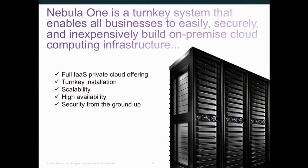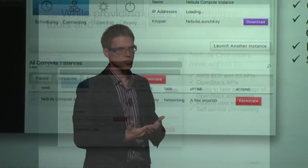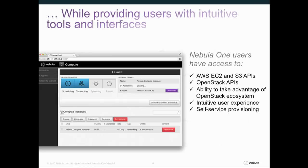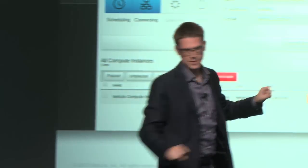So what we've done is we've built a turnkey system that provides full infrastructure services, a turnkey installation, rock solid stability, high availability — everything built from the ground up to provide an intuitive self-service experience. You get EC2 APIs, OpenStack APIs, object store, block store, elastic networking, and elastic compute in a system you can deploy in an enterprise data center in an hour. You can plug this box into a rack full of Dell, HP, or IBM servers, power it up, and it literally boots that entire rack into a cloud.